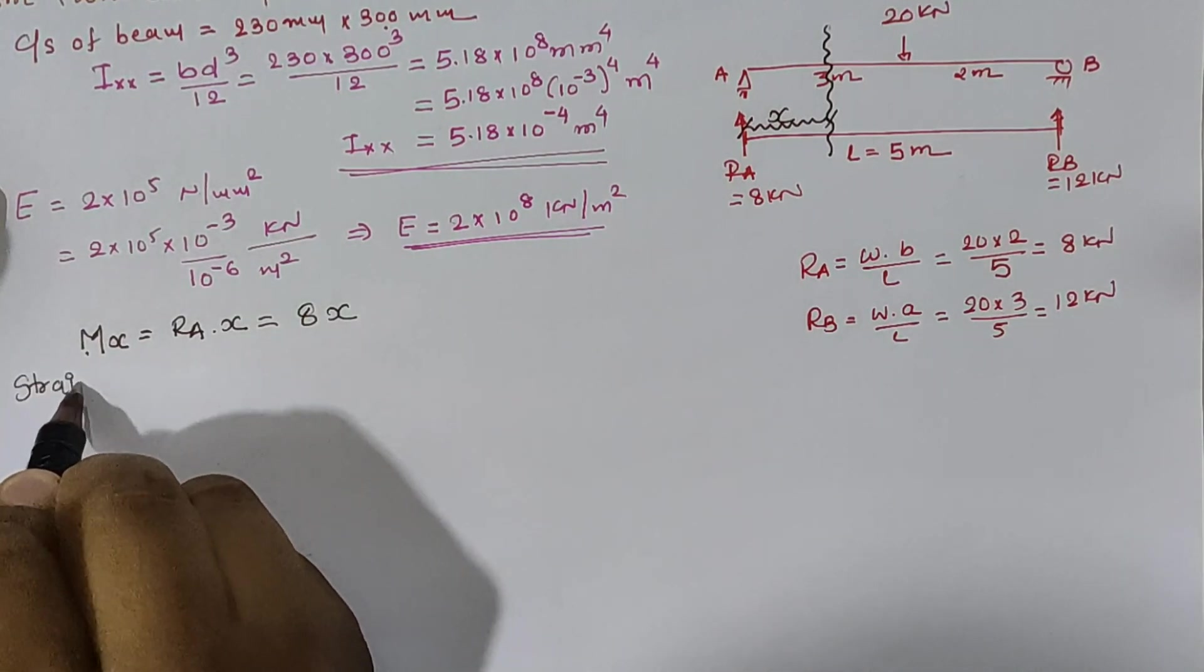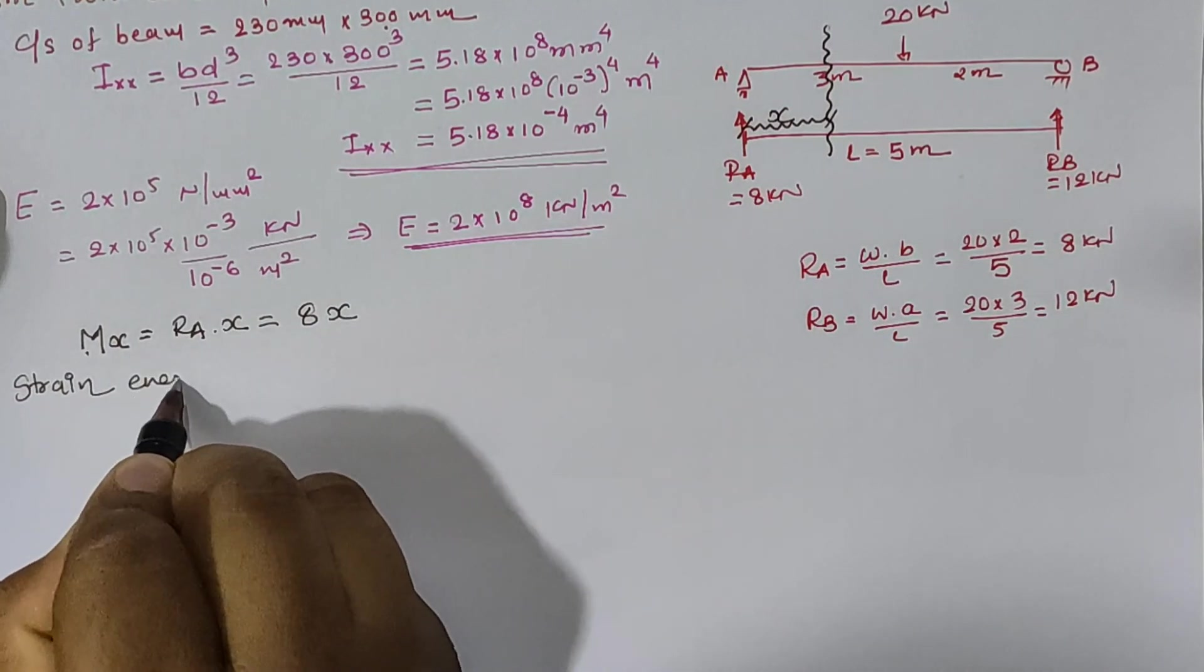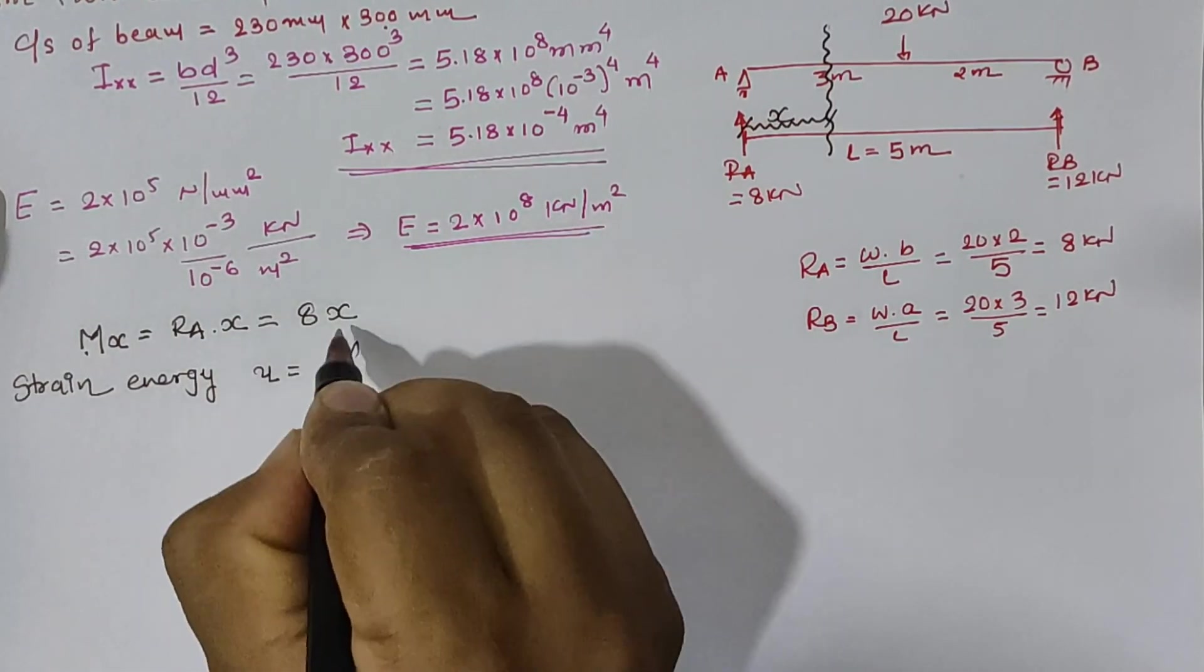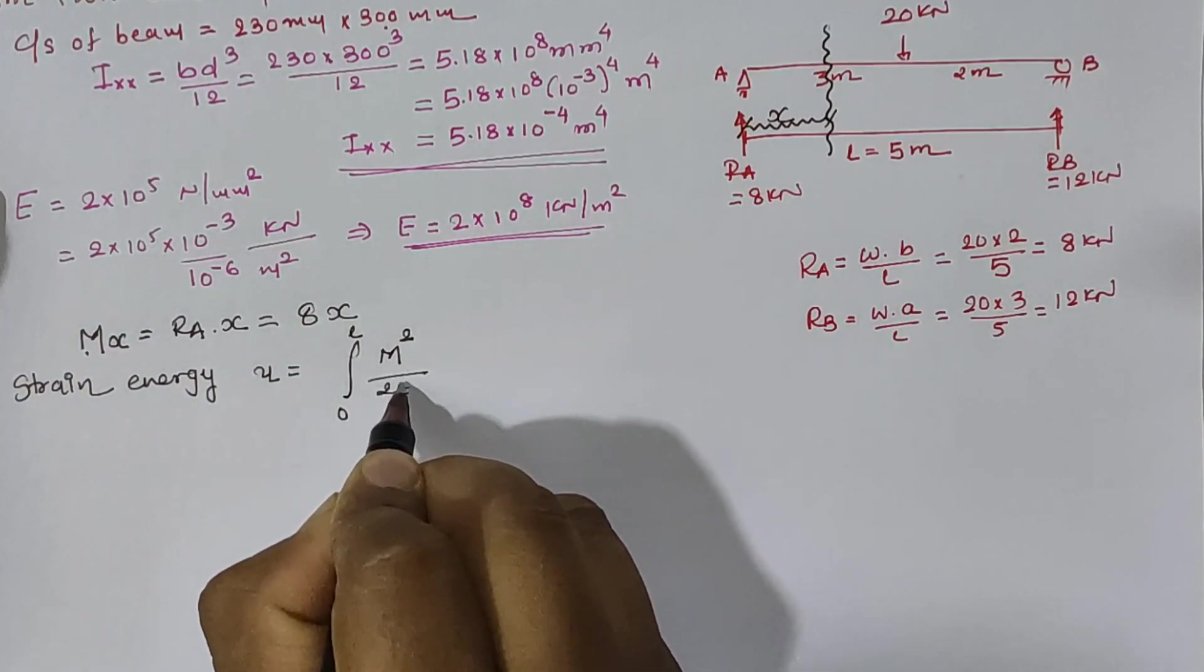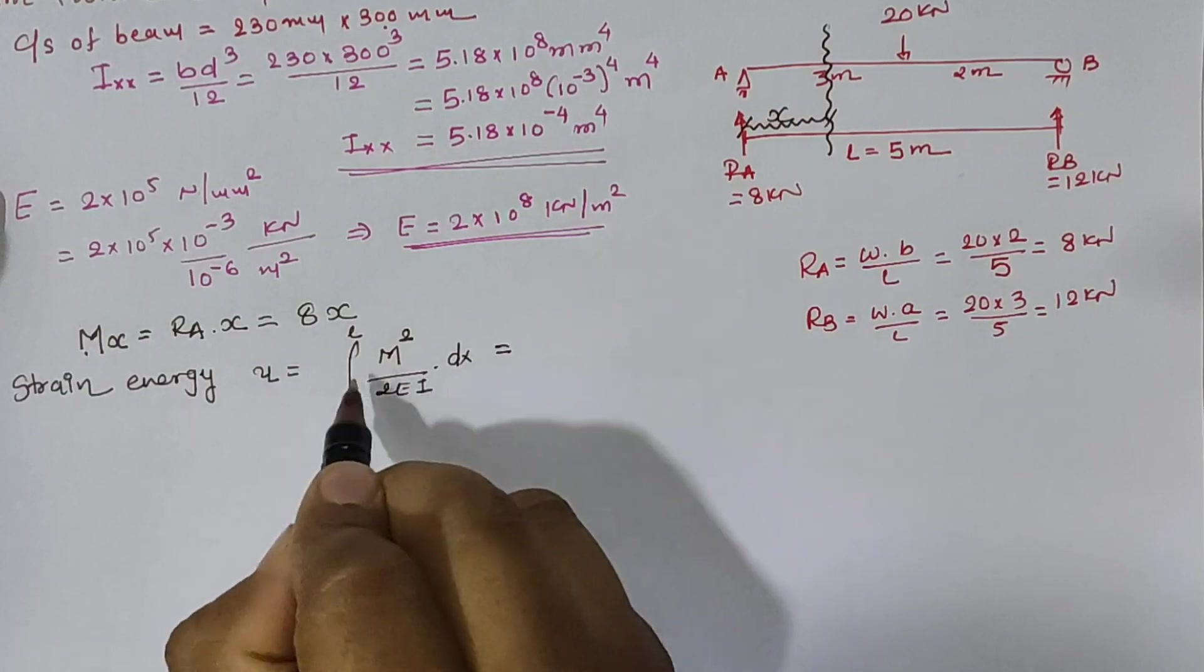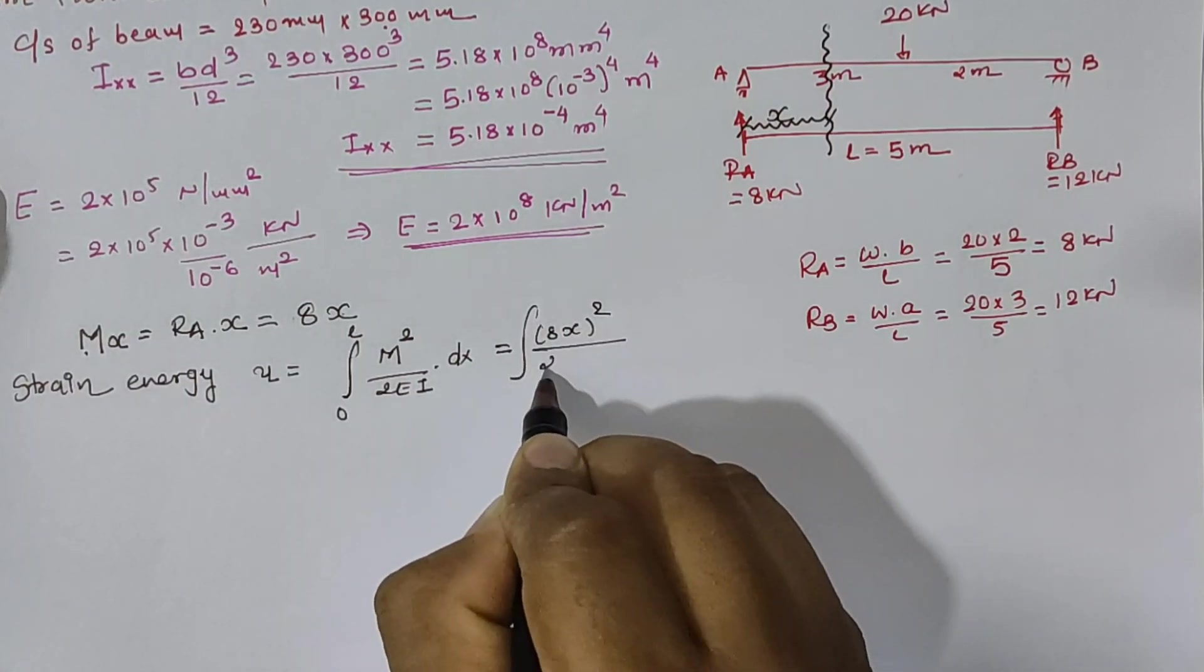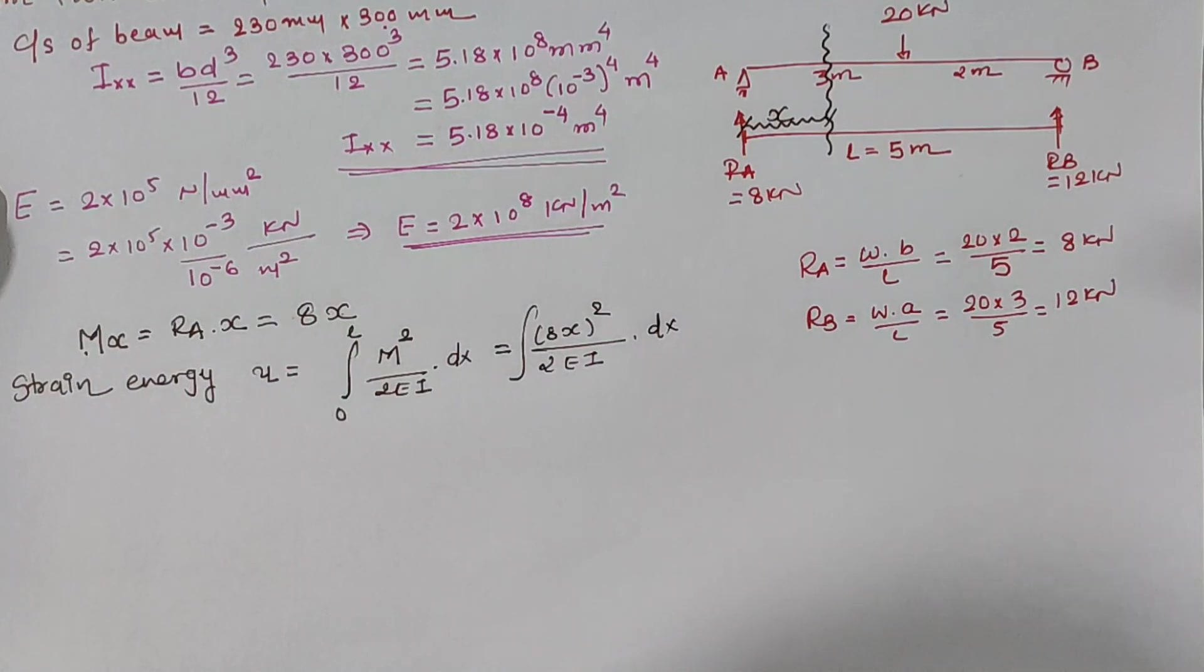Now, according to the theory for bending strain energy can be written as integration of 0 to L into moment² by 2EI into dx.